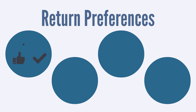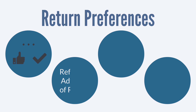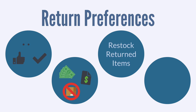A second preference is Refund in Advance of Return. This preference enables you to issue either a cash or credit refund before an item has been fully returned. If this feature has not been enabled, then NetSuite will not allow you to issue the refund before the items have been marked as returned.